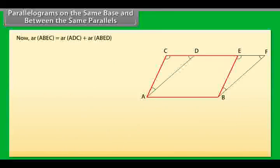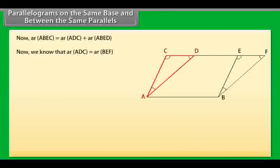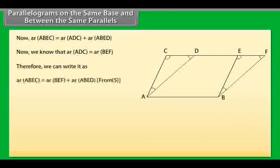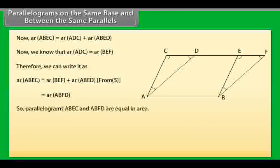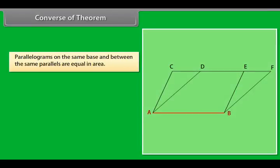Now, area of ABEC equals area of ADC plus area of ABED. We know that area of ADC equals area of BEF. Therefore, area of ABEC equals area of BEF plus area of ABED, from (5), which equals area of ABFD. So parallelograms ABEC and ABFD are equal in area. We have thus proved that parallelograms on the same base and between the same parallels are equal in area.